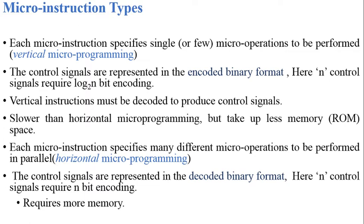Due to that, a vertical instruction must be decoded to produce control signals. In order to activate the control signals, we need to perform a decoding operation, because the control signals are represented in an encoded format. The encoded format requires only a minimum number of bits for representing the control signals, so in order to activate them, we need to decode first.